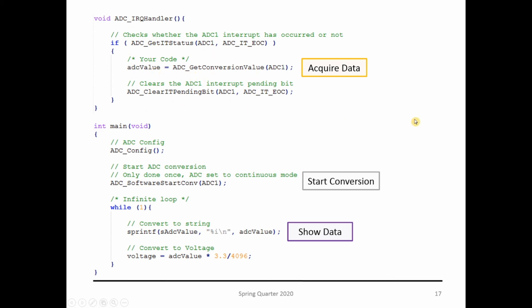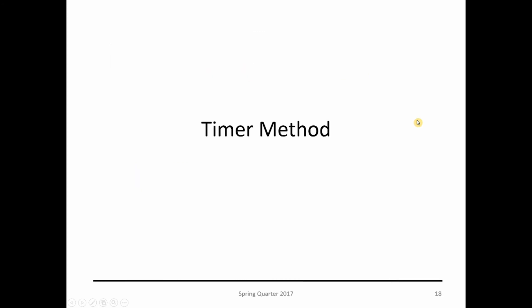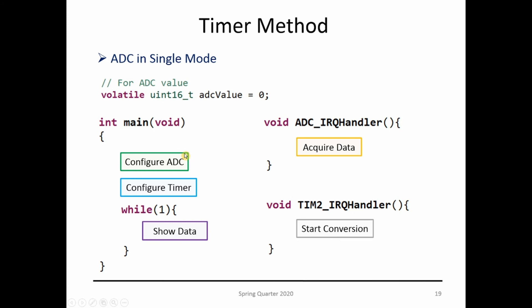Let's see the last method: the timer method. The timer is going back to single mode, but now we're responsible for the sampling rate. We have a timer that works at the sampling rate we want to acquire the data. We parameterize the ADC, configure the timer. While one shows the data, the ADC still works with an interrupt routine. Communication is still done with a volatile variable, but now the timer sets up the start of conversion.